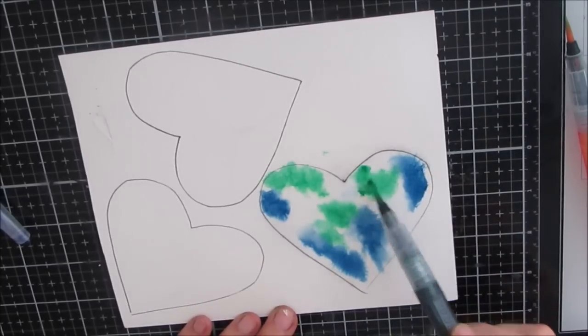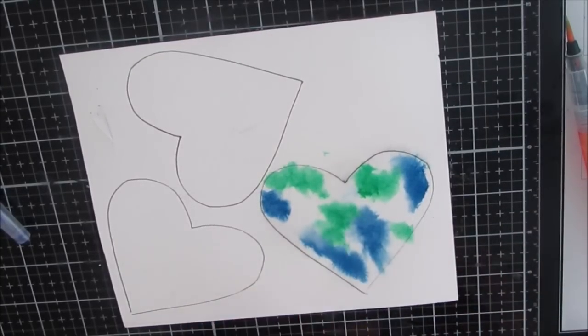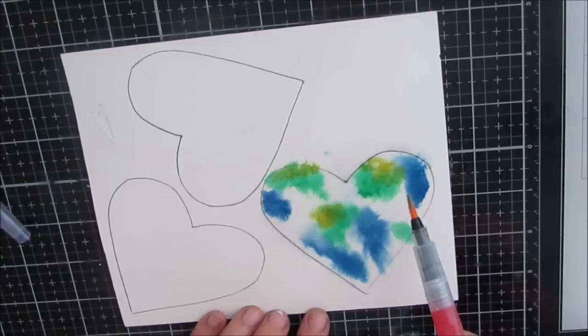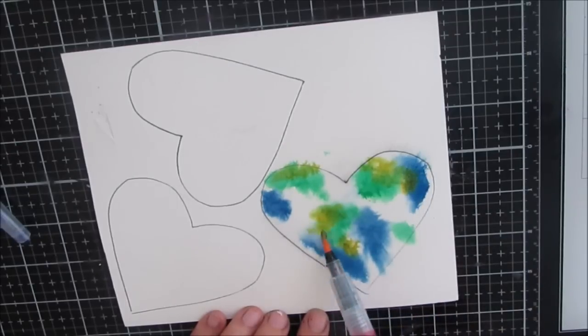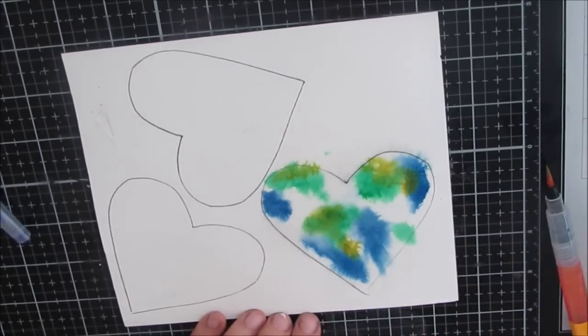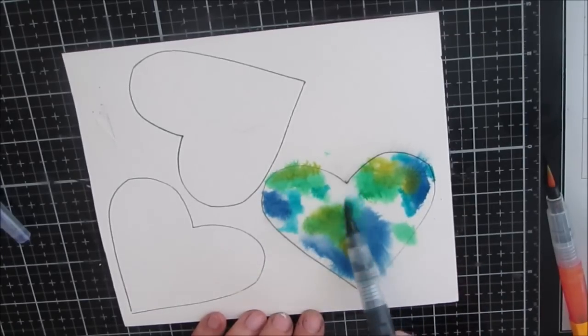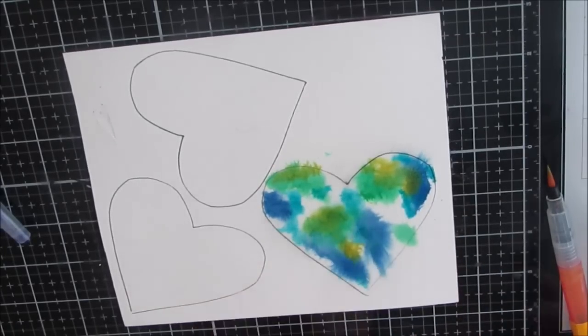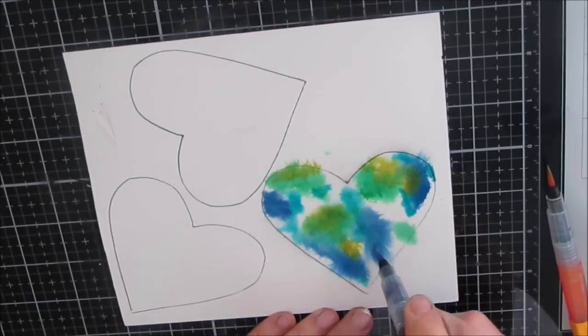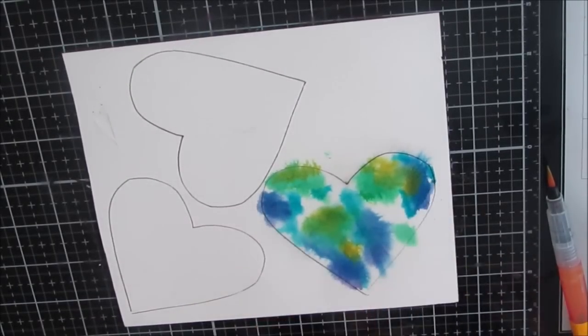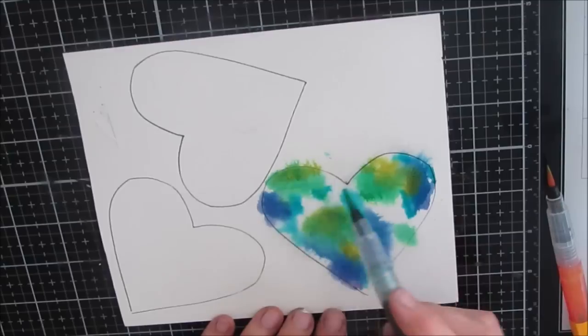So on watercolor paper I have traced out these hearts and then I dug out my mermaid markers. I'm using a dark blue, light blue, a teal and yellow, and what I'm trying to create here very abstractly is the world.